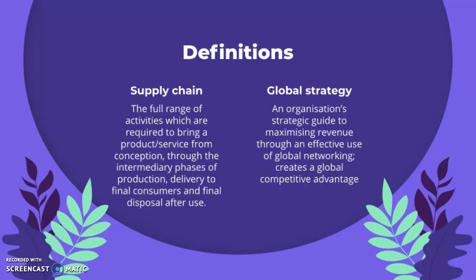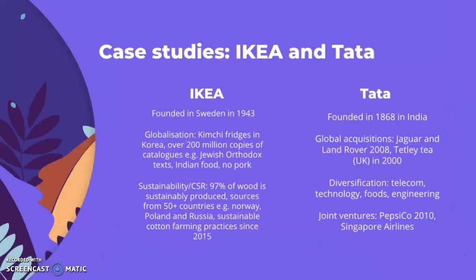A supply chain is the full range of activities required to bring a product or service from conception through intermediary phases of production, delivery to final consumers, and final disposal after use. A global strategy is an organization's strategic guide to maximizing revenue through effective use of global networking, essentially creating a global competitive advantage.